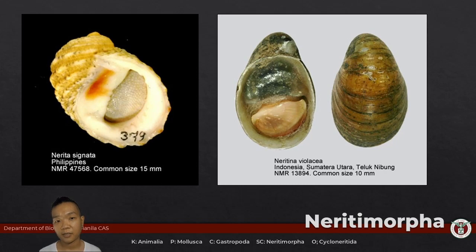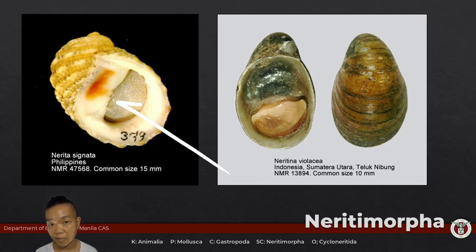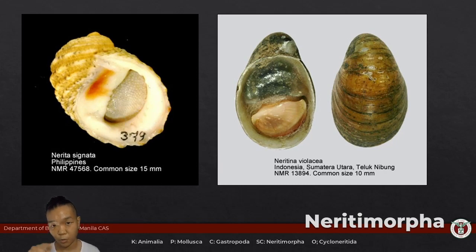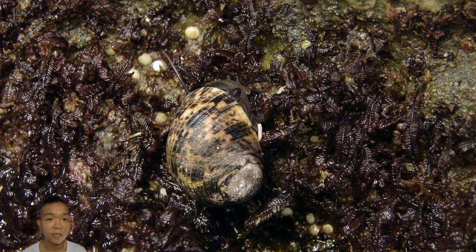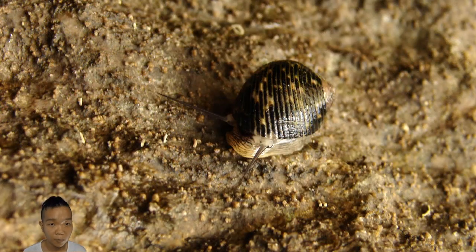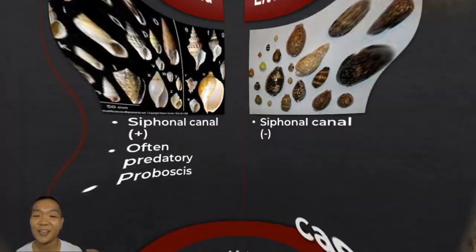Neritimorpha — the nerites. If you look at the shell, the inner lip of the aperture — the edge is not smooth, it's a bit jagged, kind of looks like they have teeth. They're small and thin. I've seen these guys in intertidal areas — having that small shell might actually help prevent you from getting swept away by the waves.